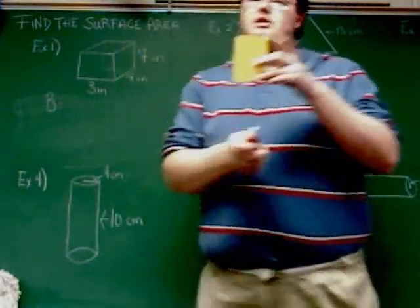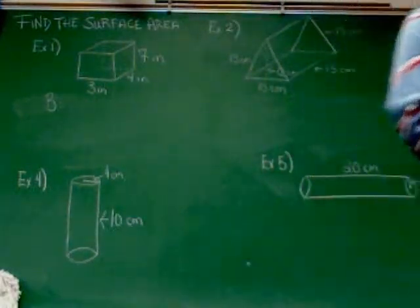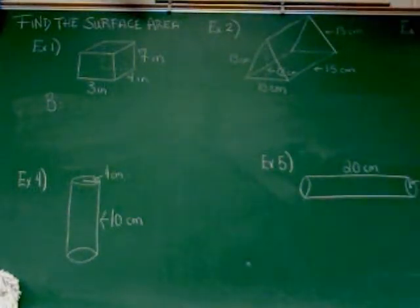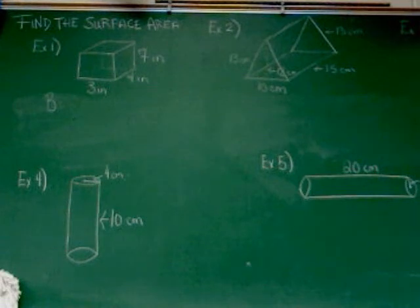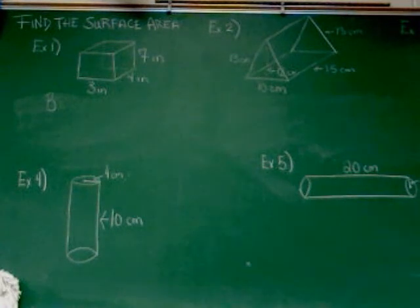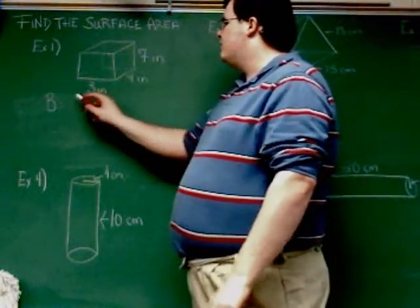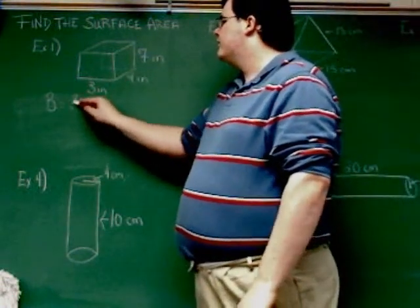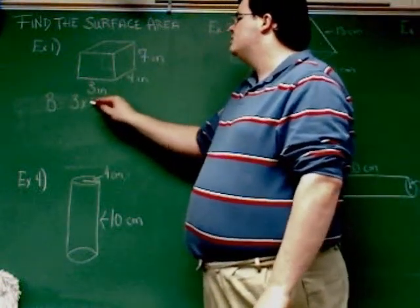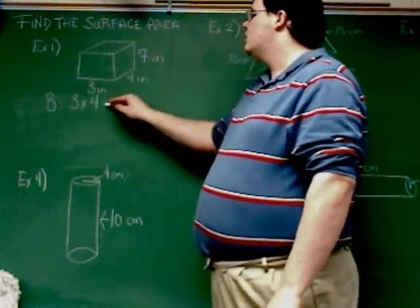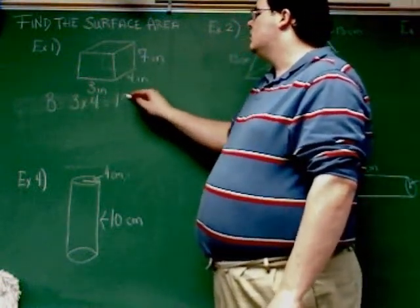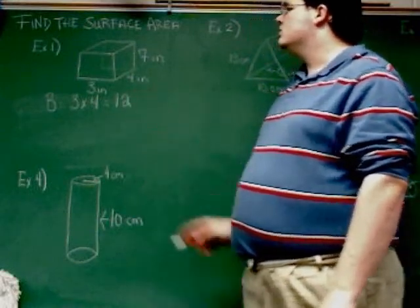The base is the part it's laying on. To find the area of the base, I do length times width. As you can see in this drawing, that's the 3 and the 4. So 3 times 4 equals 12.